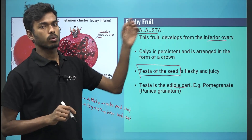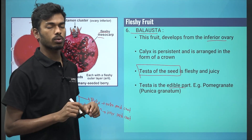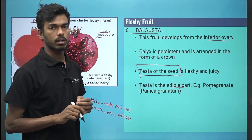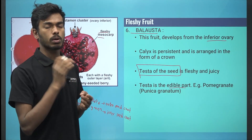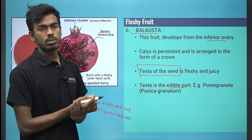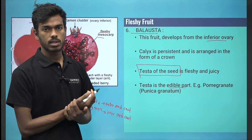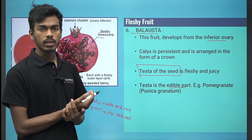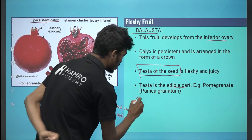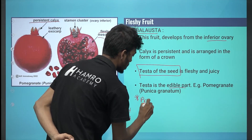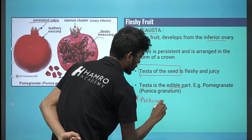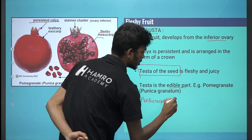Parthenocarpy is useless in which fruit? Option A: Golveda. Option B: Watermelon. Option C: Pome. Option D: Mango. The answer will be pome. So, the answer is parthenocarpy is useless in pome, where seed is the edible part.